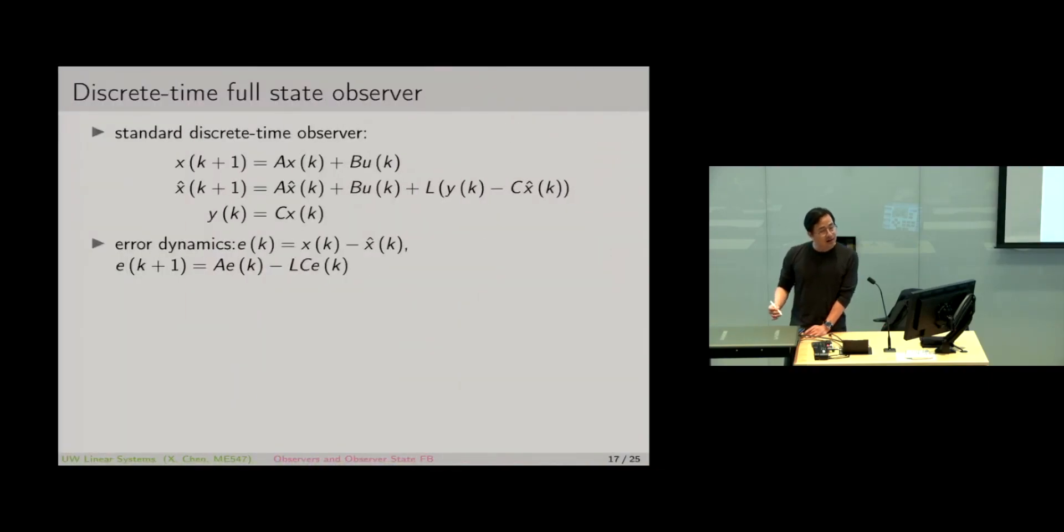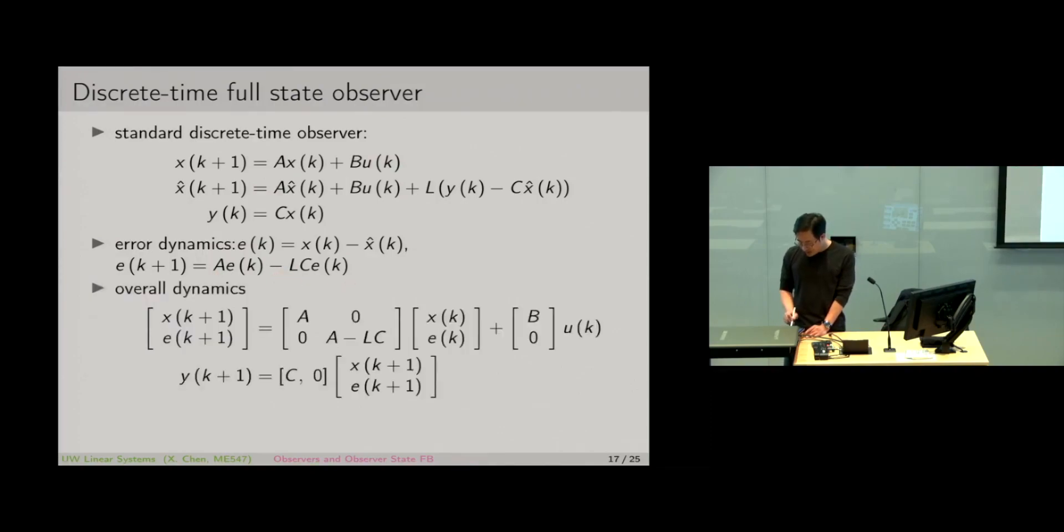The same type of analysis can be applied if we look at the error, which is X minus X hat. Then we can derive the same type of error dynamics: E(K+1) equals (A-LC) times E(K). And we can analyze the augmented system as well and see that the overall dynamics also has this very nice separation of eigenvalues.